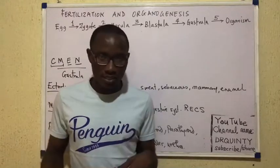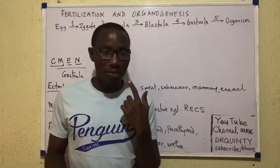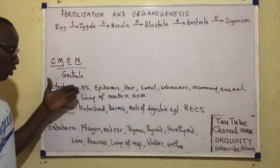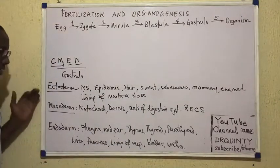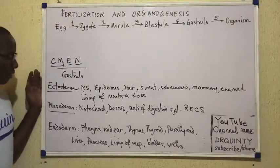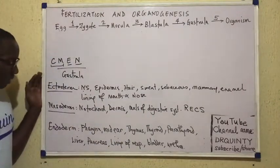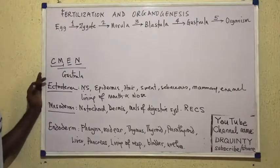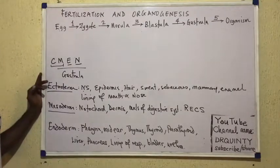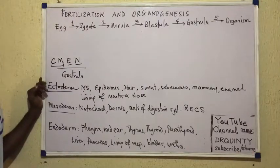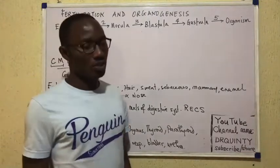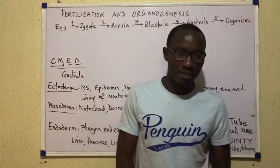Importantly, the lining of the entire digestive tract is endodermal in origin — except the mouth and the anus. Note the difference: the muscles of the digestive tract are mesodermal, but the epithelial lining of the digestive tract is endodermal. So these are the structures that arise from ectoderm, mesoderm, and endoderm. You may want to take some time to note them in case you see them in an exam. That's the module on fertilization and organogenesis.